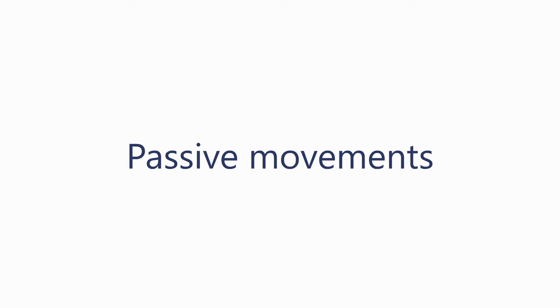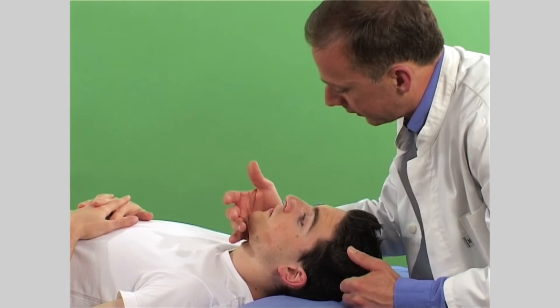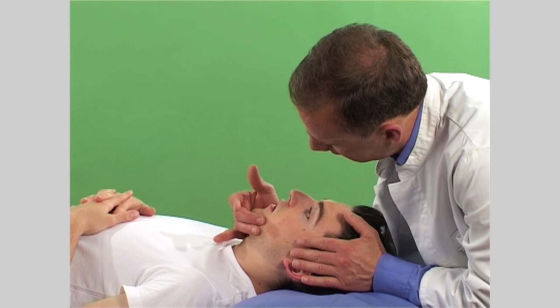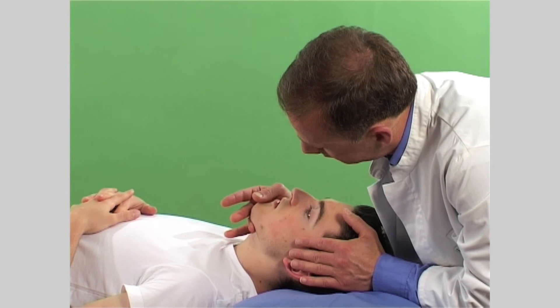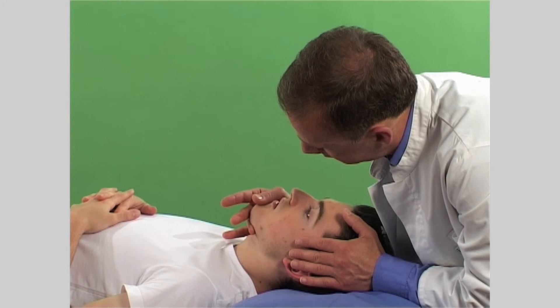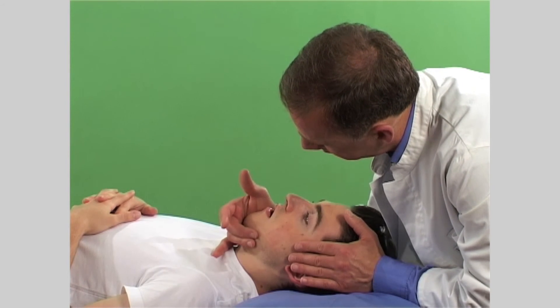Passive movements of the jaw are best carried out in the supine position. Check for depression — the mandible is held between the thumb and index finger. The free hand palpates the TMJ as the mandible is depressed. Then assess elevation using the same hold, palpating the TMJ with the free hand as the mandible is returned to its closed position. For lateral deviation, move the mandible laterally back to the midline and then to the opposite side, palpating the TMJ with the free hand.